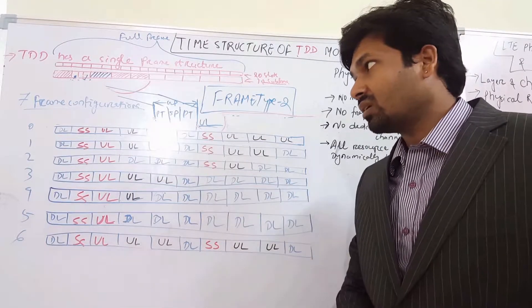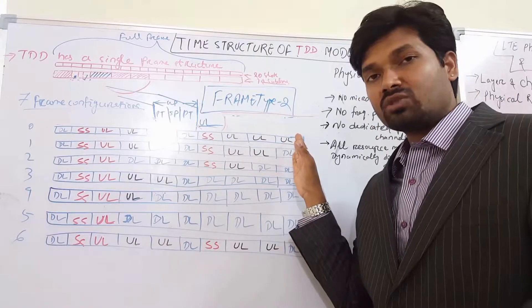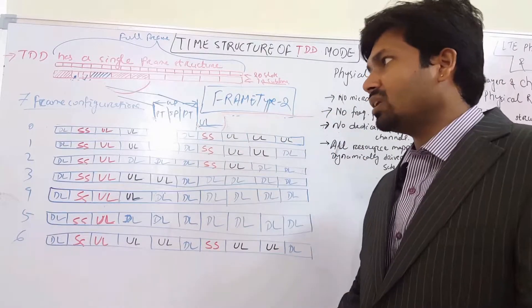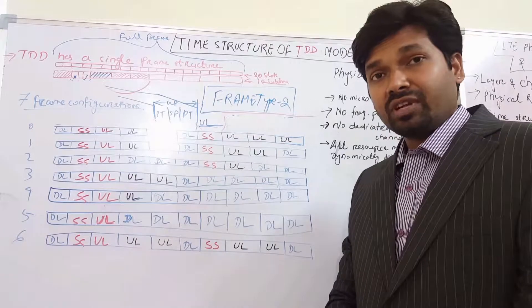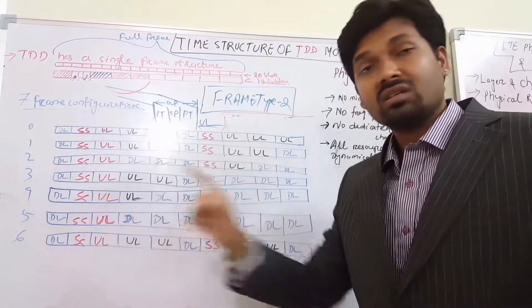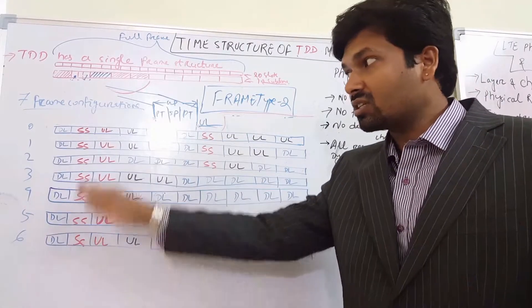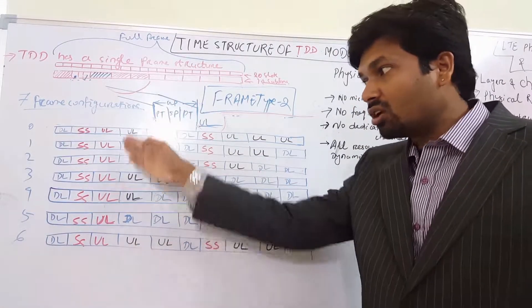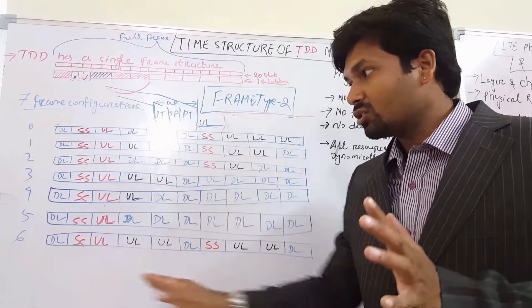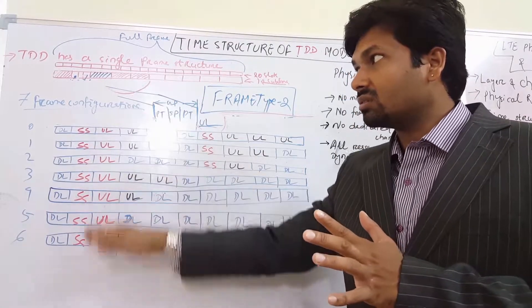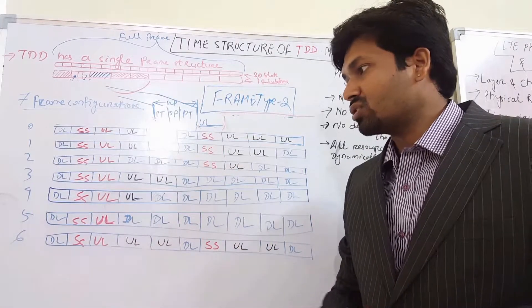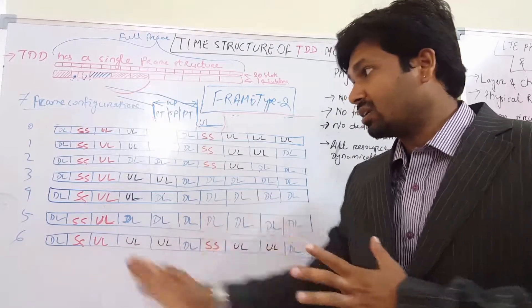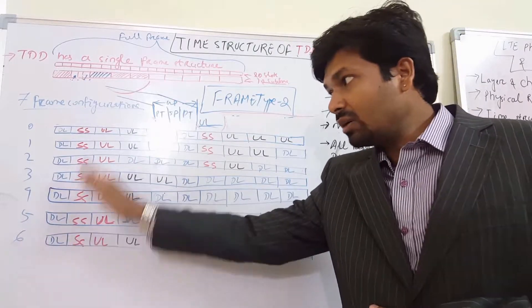For frame type 0, we have 10 subframes. We can use it as a half frame or full frame — I have taken the full frame example. The first subframe of every TDD frame type 2 is a downlink subframe; everything starts with a downlink subframe. The second one is reserved for special subframes and the third one is reserved for uplink. Those three are constant, irrespective of any frame configuration. That is why I have colored them red and blue for downlink.